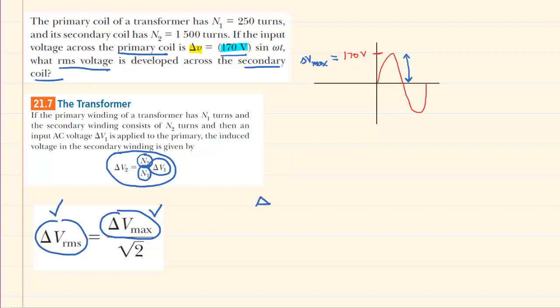So we'll begin to set this up by using the given values. Again, the number of turns in the secondary coil is what we need first, and that is 1500. So we'll have 1500 as the value of N₂, and then N₁ is the number of turns in the primary coil. That's 250 multiplied by the potential difference in the primary coil, which we have said is 170 volts, at least it is for the maximum value.